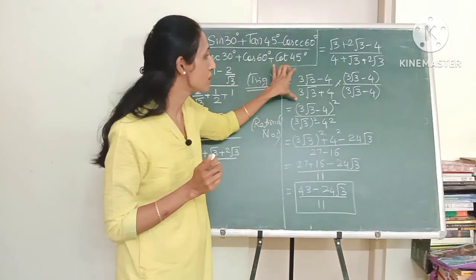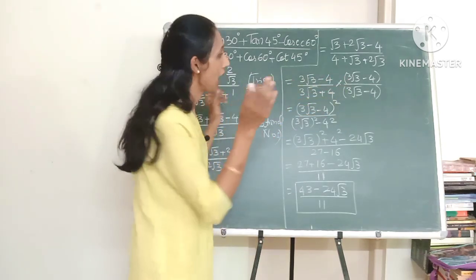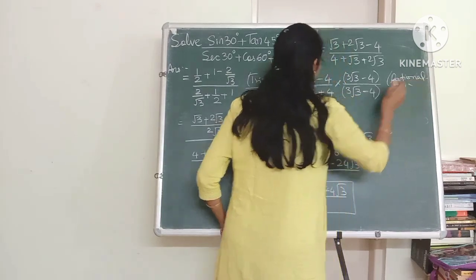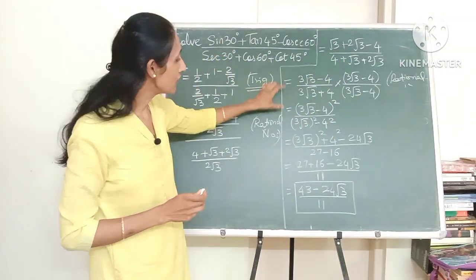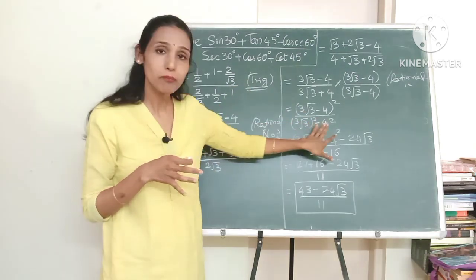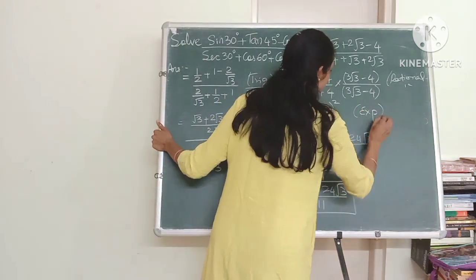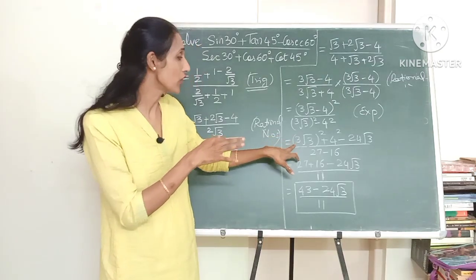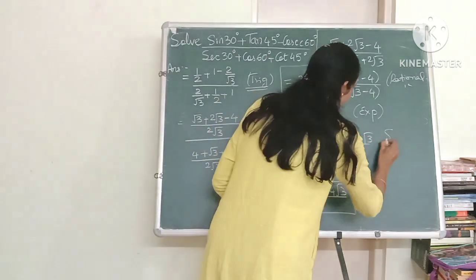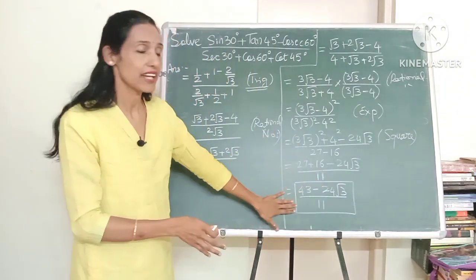Now can you guess what is being done in this step? Yes we are rationalizing the denominator. So I can write rationalization. So I am rationalizing over here and after this we have used expansions. Do you recall a minus b the whole square, a square minus b square? Those concepts are being used. So let me write here expansion concept and here we should know what is 3 root 3 the whole square. So my knowledge of squares and square roots will be very handy. So let me write here squares and square roots and finally we arrive at the answer.